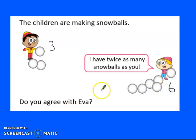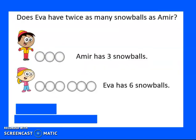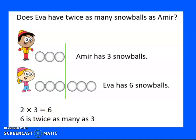And she says, I have twice as many snowballs as you. So when we have something that's twice as many, it means that we have that number and we double it. So it's 3 times 2. Does that equal 6? Let's have a look here. It does equal 6. As you can see here, we have the amount that Amir has, which is 3. And the amount that Ava has, which is 6. And she has 3 add another 3, which is twice as many as 3.